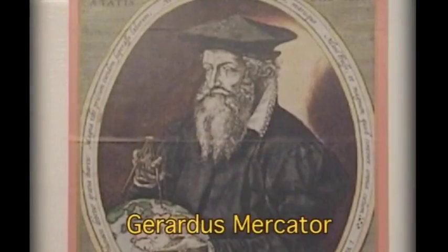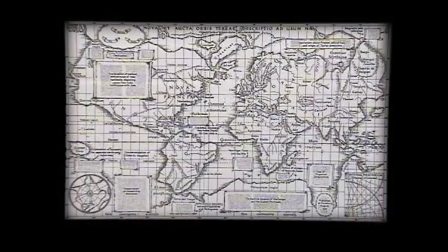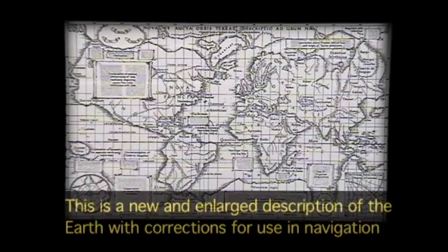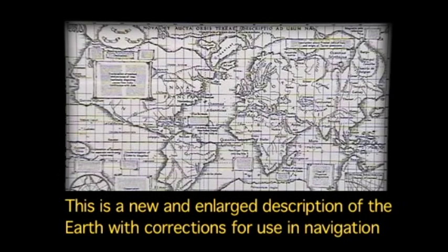It all depends upon what's important to you, what you're emphasizing, what your concerns are, to determine which projection you would pick. I'm going to introduce a projection that was invented by a fellow named Gerhardus Kramer. He's known in the trade as Mercator. This is a redrawing of his original map from 1569. On the face of the map it says this is a new and enlarged description of the earth with corrections for use in navigation. He was very specific about the purposes for which that map would be used.